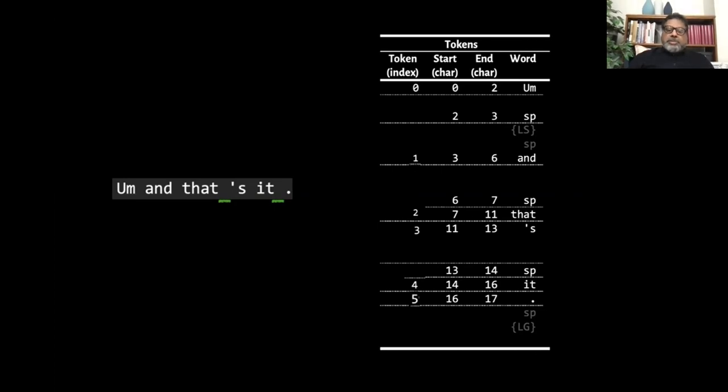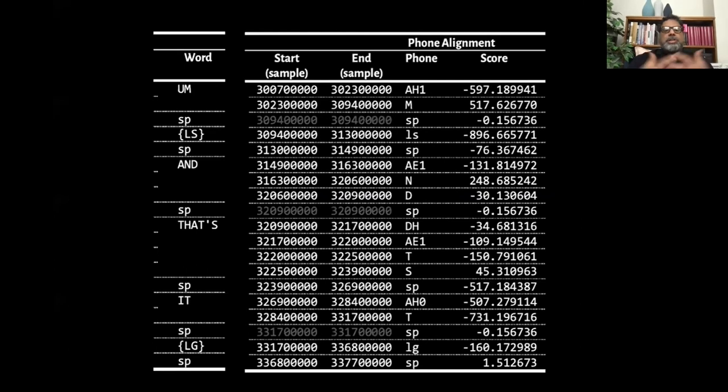The next is the tokenized sentence where you have space added between these two tokens that's apostrophe s and the it and the period and you see on the right hand side that the tokens have attributes so there is a token index. Each token has a start and end character and space also has a start and end character and space is represented by sp and these other things that we removed like the ls which is for lips smack and lg which is laugh are shown as grayed out.